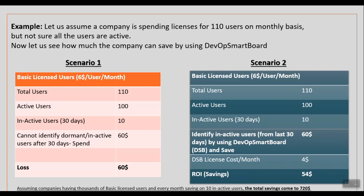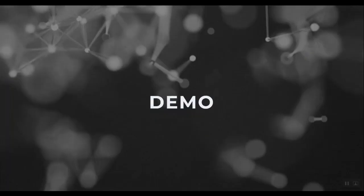And if you consider companies with hundreds or thousands of Basic-licensed users, an admin can check DevOps Smart Board every day or month to see any users who haven't accessed Azure DevOps in the last 30 days and downgrade or remove them. For example, if we identify just 10 inactive users every month, we save around $720 per year, while the DevOps Smart Board license costs only $40 per year — giving you over $600 in return on investment.